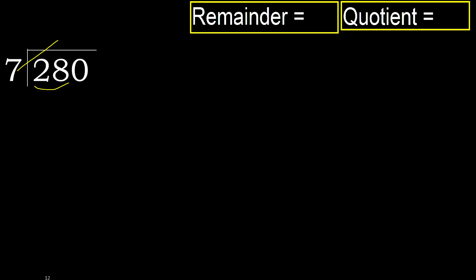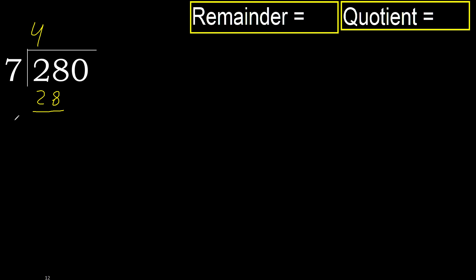7 multiplied by 5 is 35, which is greater. Multiplied by 4, 28 is not greater. 28 minus 28 equals 0.